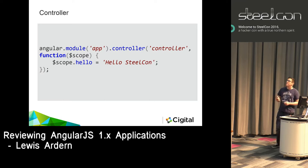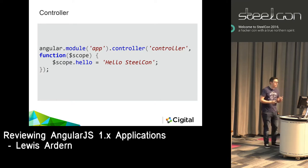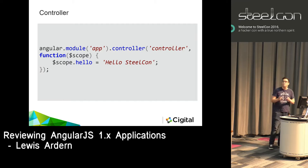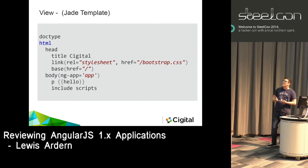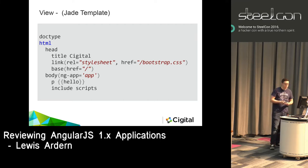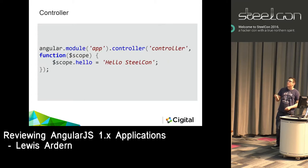You have controllers - you do module app, include a controller, give it a name. Then you have scopes, which are objects used to reference things in the view - text, arrays, objects. Once you define something in a scope object you can reference it with an expression in the view. As a demo: a scope called 'hello' with text 'HelloSteelCon' bound with ng-app and ng-controller would display HelloSteelCon on the view.